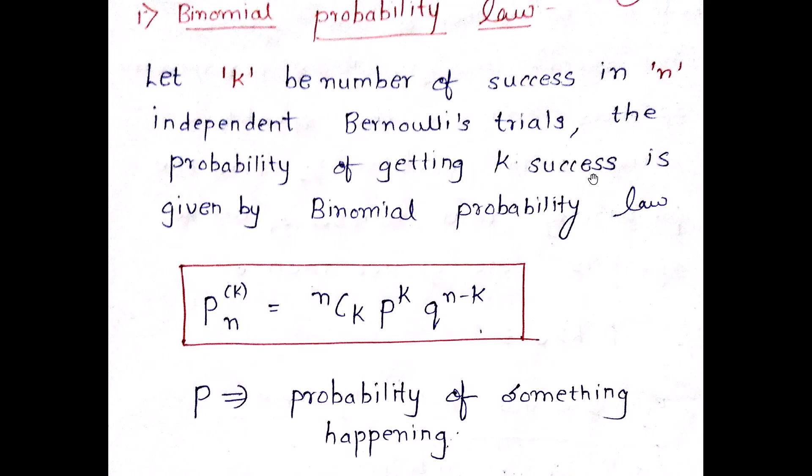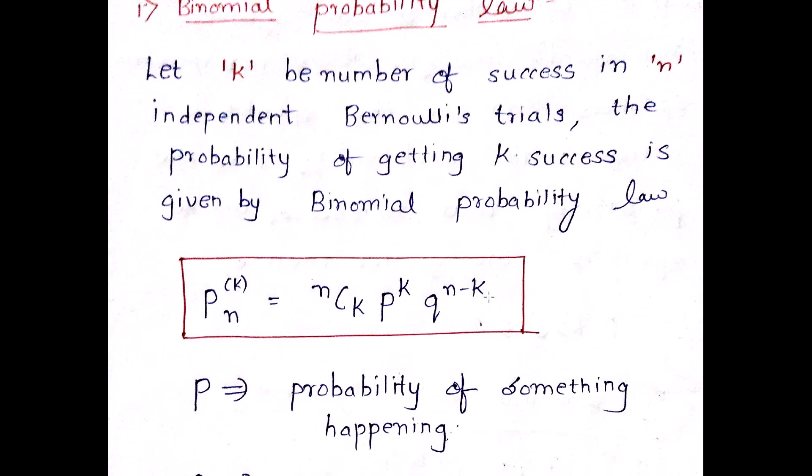So the probability of getting k success is given by a probability law: nCk, you have learned permutation and combination, so it is nCk, p raised to k and q raised to n minus k. The binomial probability law says that if there are n independent trials and k is the number of success in that, then the probability of getting k success is given as nCk, p raised to k and q raised to n minus k.